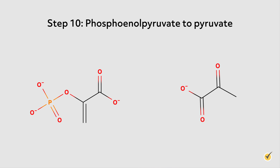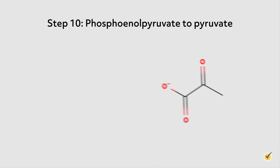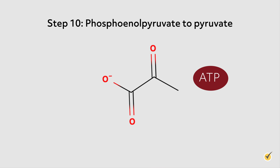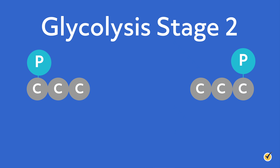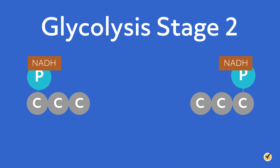Step ten: PEP is converted to pyruvate, which is the final product of glycolysis. This conversion step generates one more molecule of ATP for a grand total of two ATP molecules for the second stage of the process and glycolysis as a whole. This wraps up stage two for our first GAP molecule, but remember that stage one produced two GAP molecules — all this means is that we need to go through stage two again for the second molecule of GAP.